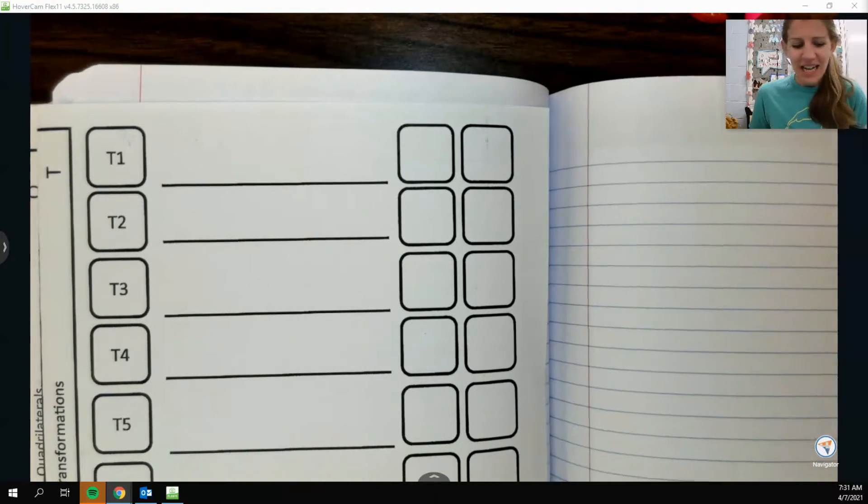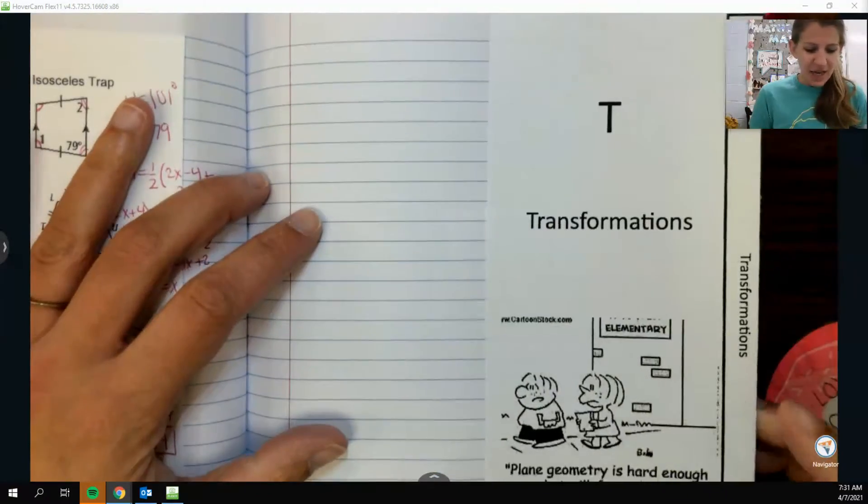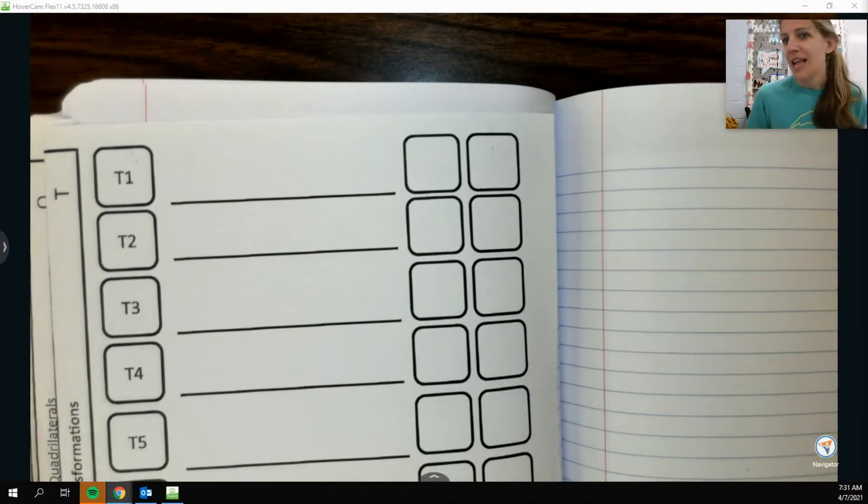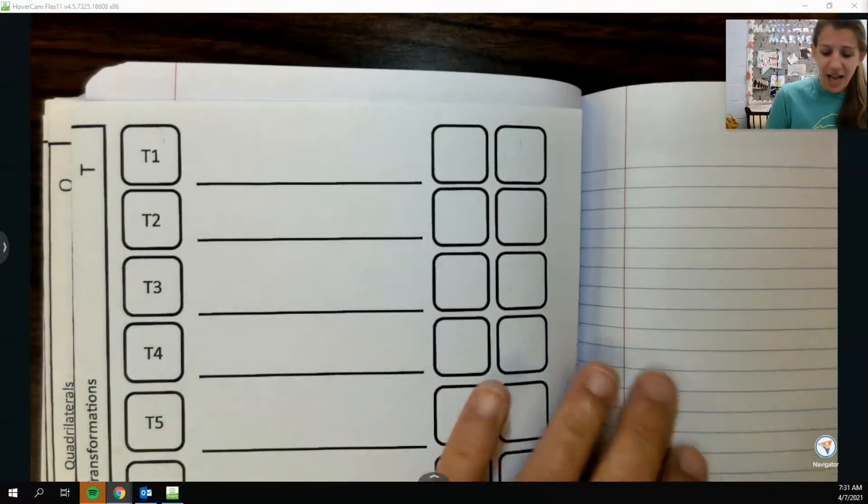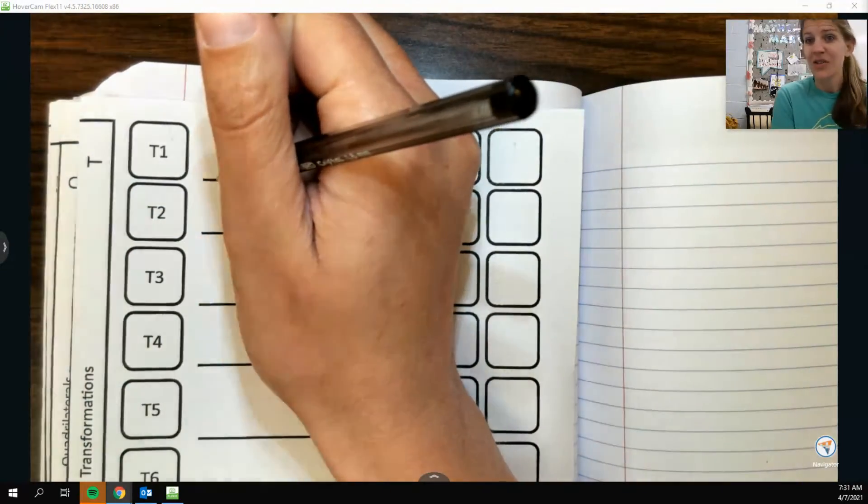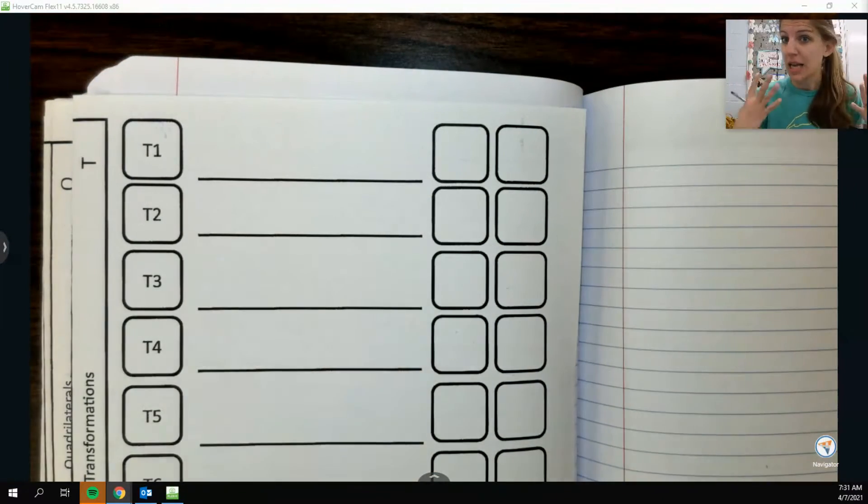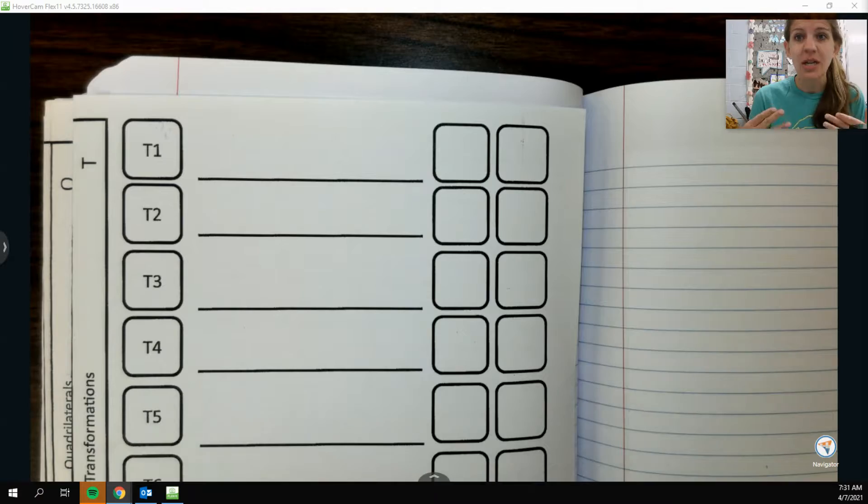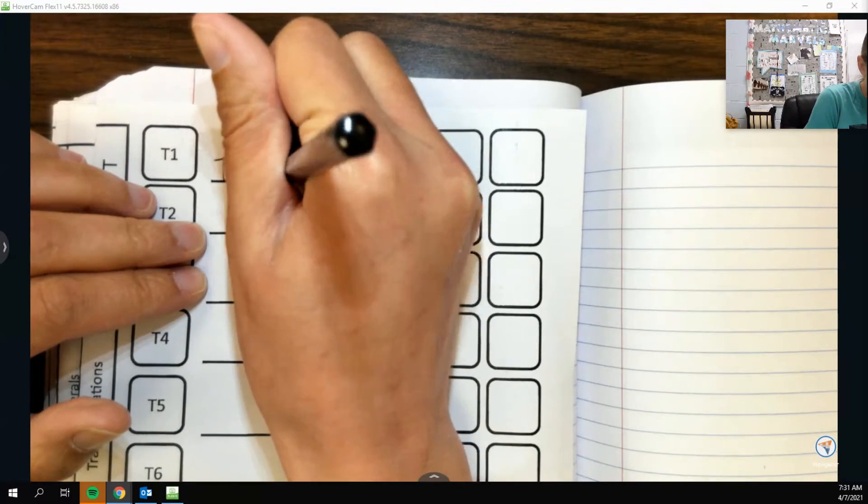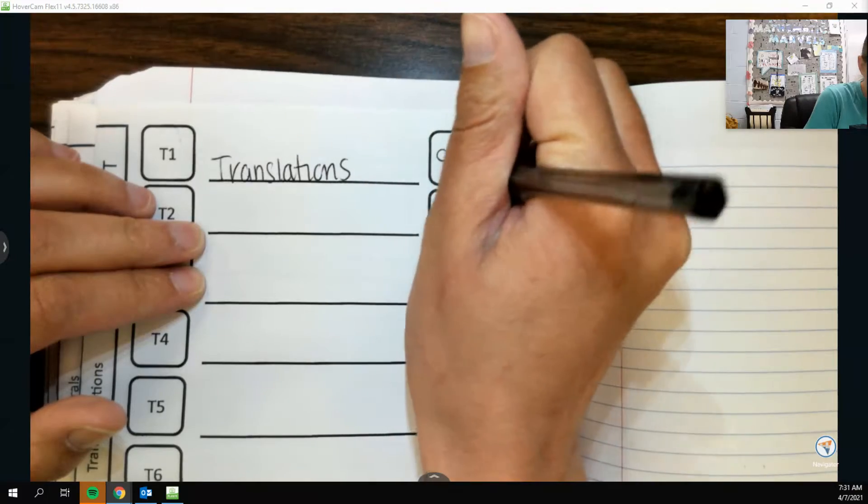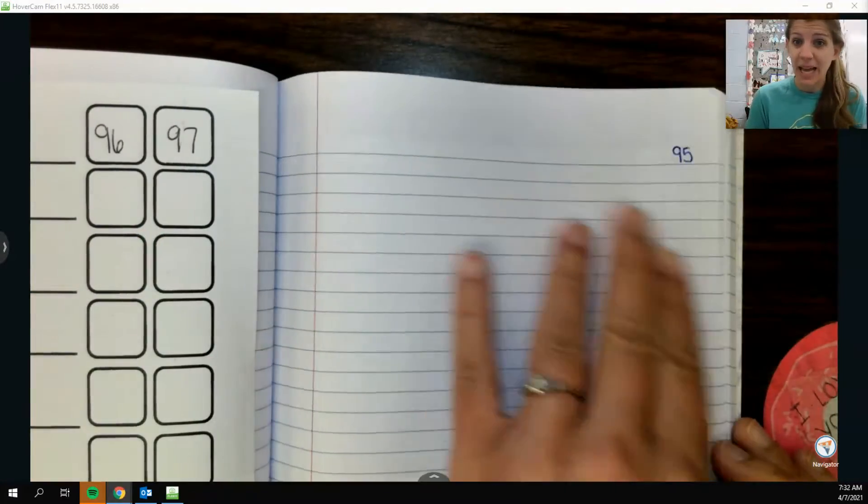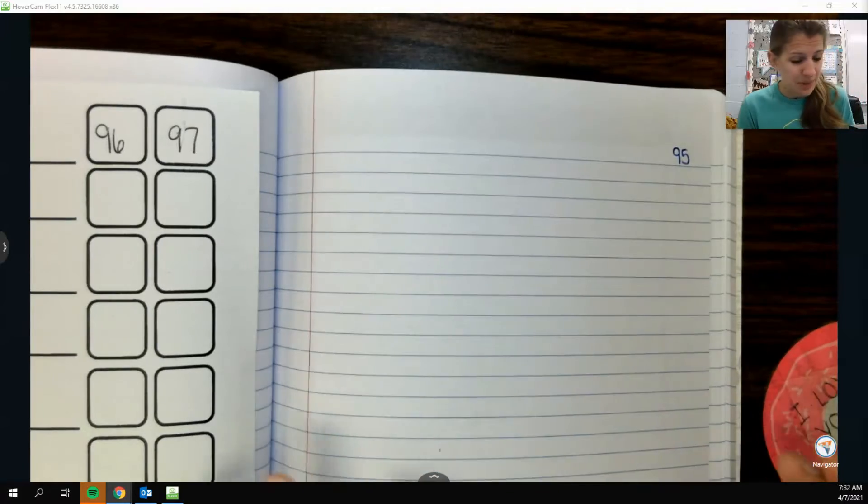Anyways, we're going to start our brand new chapter talking about transformations. Transformations are super fun, I love them a ton. It's just about having a shape on a graph and moving it around and making it change. I think it's so neat. The first type of transformation we're going to talk about is a translation.